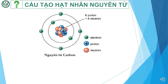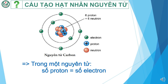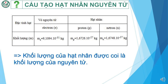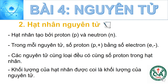Thêm 1 lưu ý nữa: nguyên tử trung hòa về điện có nghĩa là trong nguyên tử, số điện tích âm bằng số điện tích dương, có nghĩa là trong 1 nguyên tử, số proton sẽ bằng số electron. Khi xét về khối lượng nguyên tử, proton và neutron có cùng khối lượng, còn electron có khối lượng rất bé không đáng kể. Do đó, khối lượng của hạt nhân được coi là khối lượng của nguyên tử. Tóm lại: hạt nhân tạo bởi proton (P) và neutron (N); trong mỗi nguyên tử số proton bằng số electron; các nguyên tử cùng loại đều có cùng số proton; khối lượng hạt nhân được coi là khối lượng của nguyên tử.